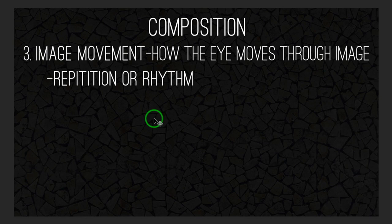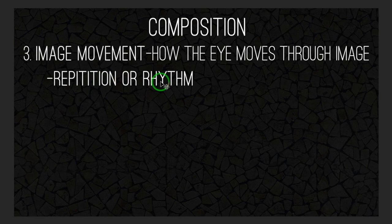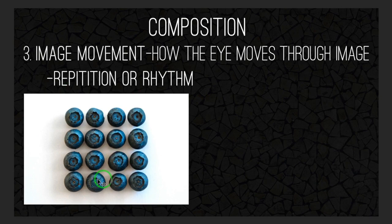The last rule is image movement, and the first aspect is repetition or rhythm. Here we have a bunch of blueberries lined up symmetrically — they're all the same, and it's easy for our brain to look at and understand. The next version has repetition in the light and the structure of a building, and that repetition is leading us through the image. Notice image movement — we're using this to lead us through that image.